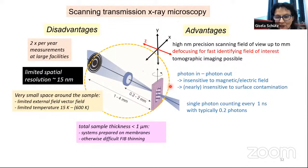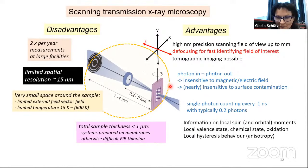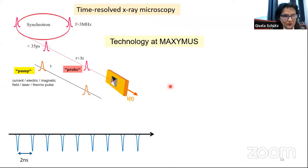But what is the advantage? You have high-precision scanning. You can also turn the sample for tomographic measurements. Then you can move here the sample in set direction, so you can easily defocus and find quickly the field of interest. So tomographic imaging is possible. Photon in, photon out, means you are insensitive to magnetic or electric fields. And you are nearly insensitive to any surface contamination, which you have for beam or electron microscopy things. So you have, with the photon avalanche diode, you can single photon counting every one nanosecond, and you can use all the benefit of XMCD and XMLD.